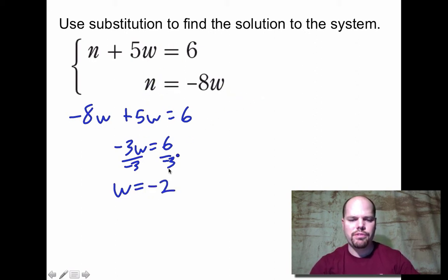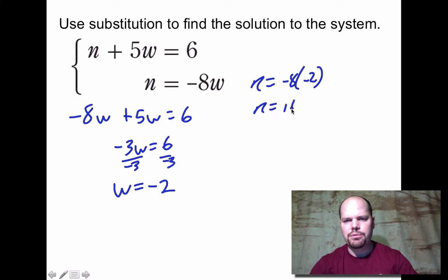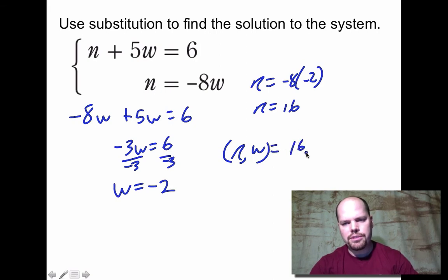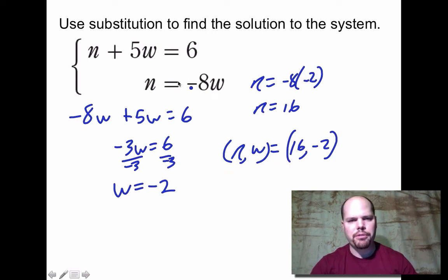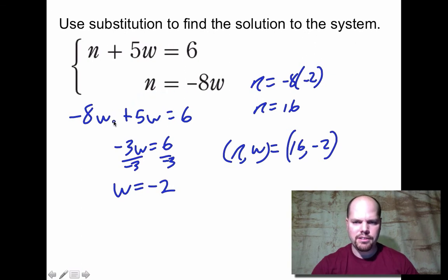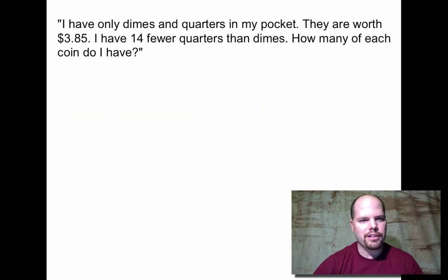Using the bottom equation to find n: n = -8 × (-2) = 16. The solution as an ordered pair (alphabetical order, n then w) is (16, -2). Checking: 16 + 5(-2) = 16 - 10 = 6 ✓, and 16 = -8 × (-2) ✓.